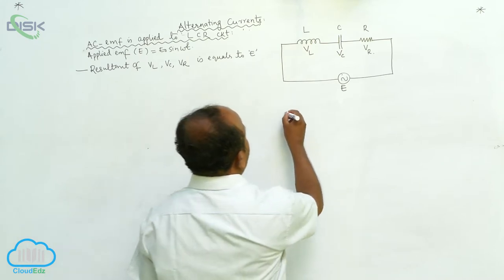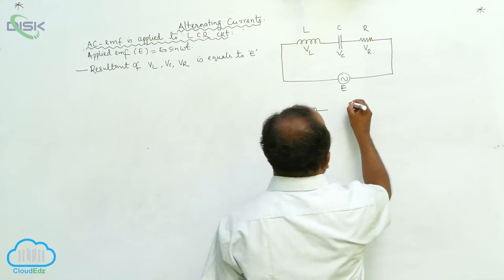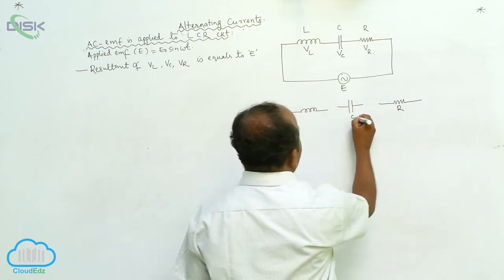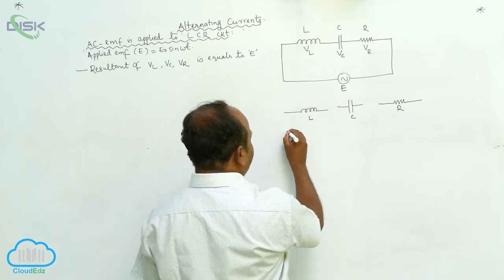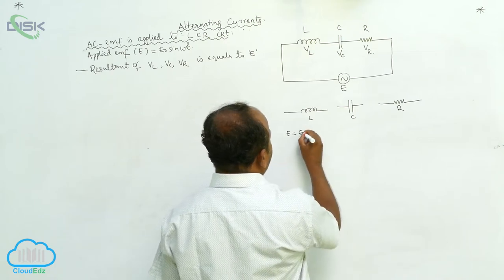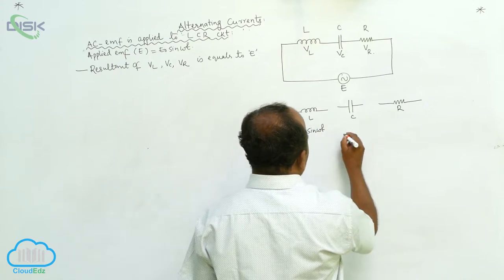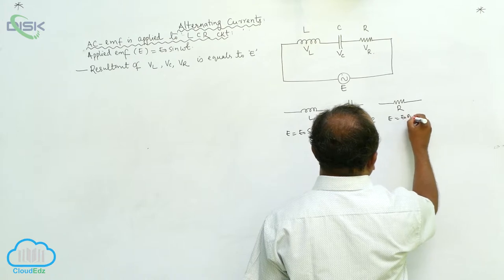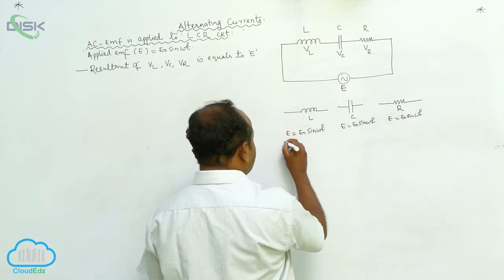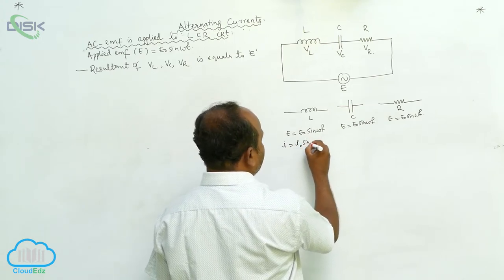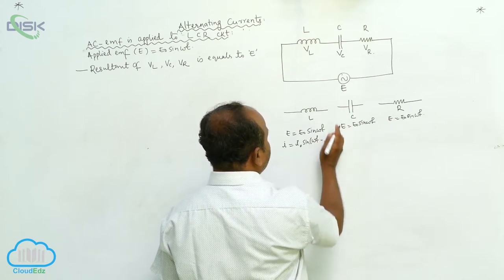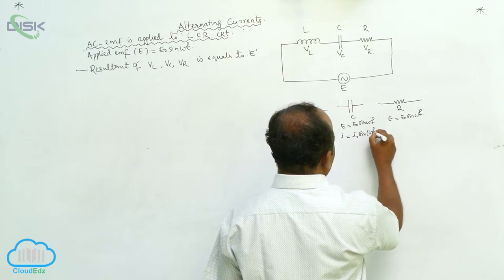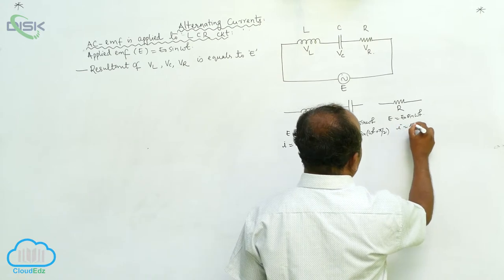Separately, for the inductor, the EMF is equal to E₀ sin(ωt), and the current expression is I₀ sin(ωt − 90°). For the capacitor, I is equal to E₀ sin(ωt + π/2). For the resistor, I is equal to E₀ sin(ωt).